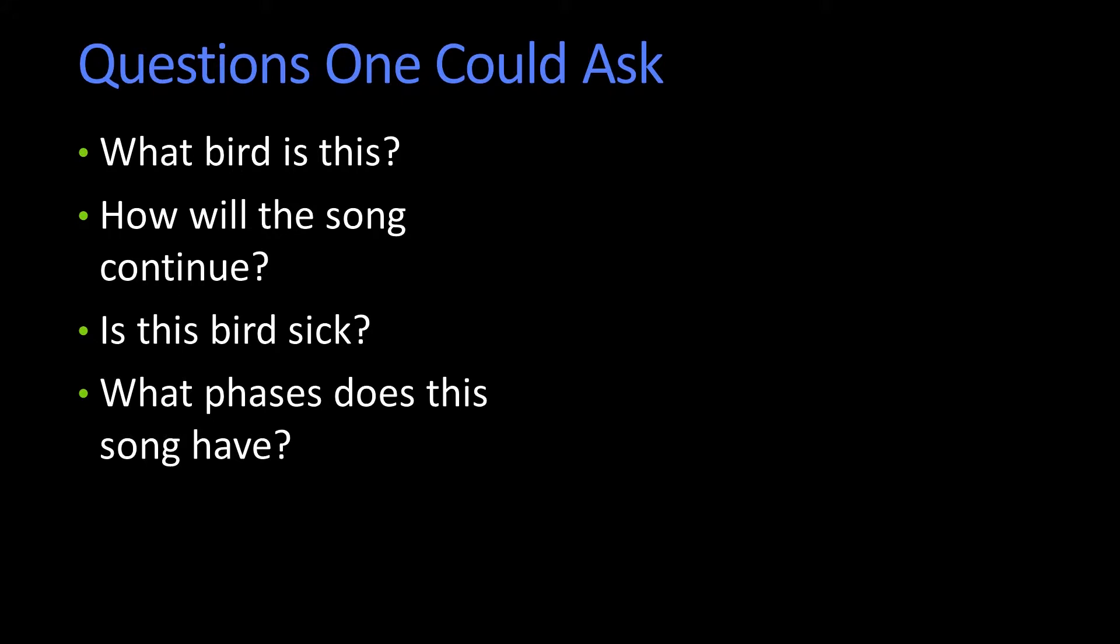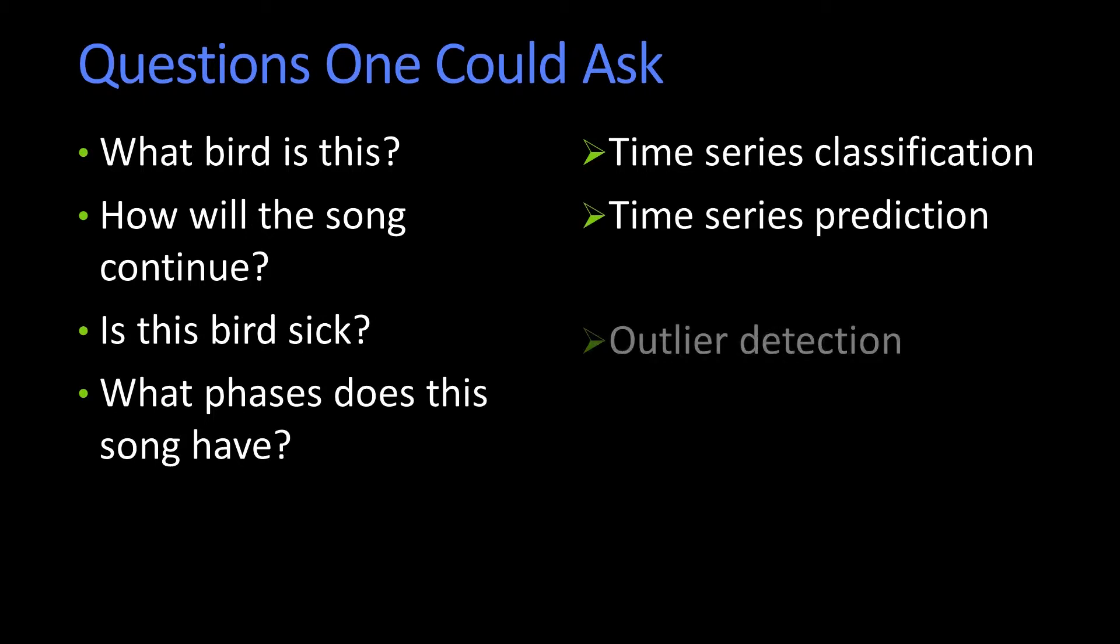When you think of these in a time series context: which bird it is - that's a classification problem, time series classification. How long will it continue? That's prediction. Is this bird sick? That would be outlier detection. And finally, you get segmentation.